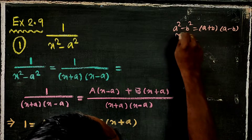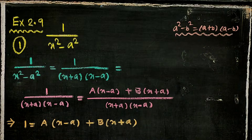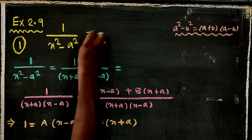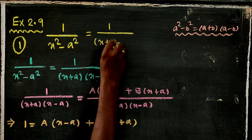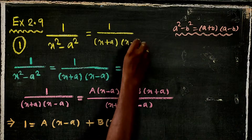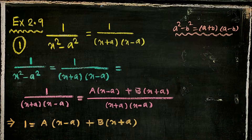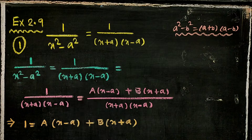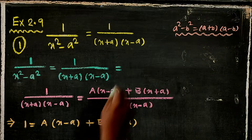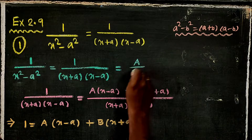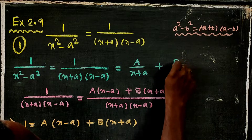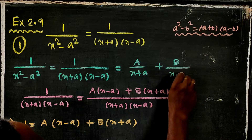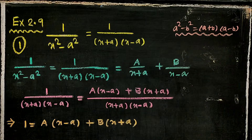That is why 1 by x² minus a² can be written using partial fractions. The result of the partial fraction is equal to A by one factor plus B by another factor, specifically x minus a.